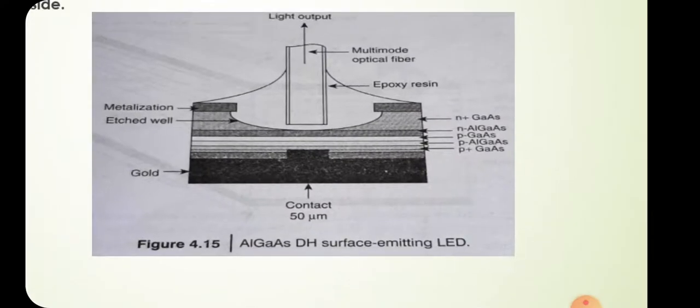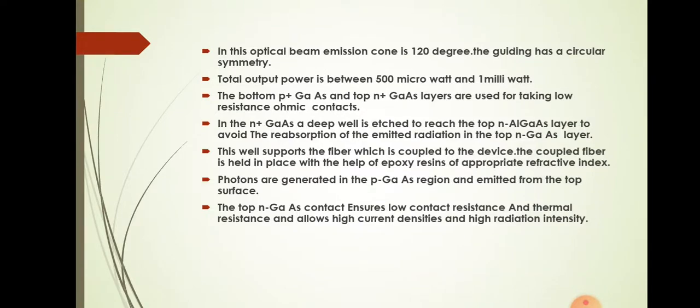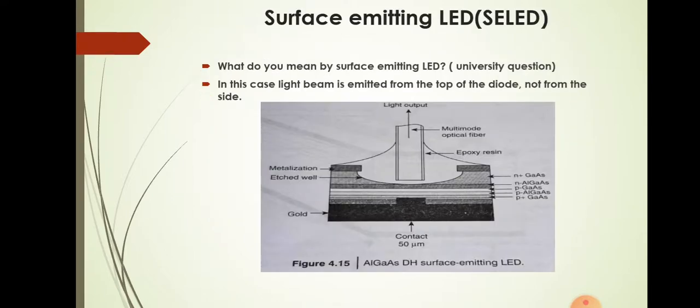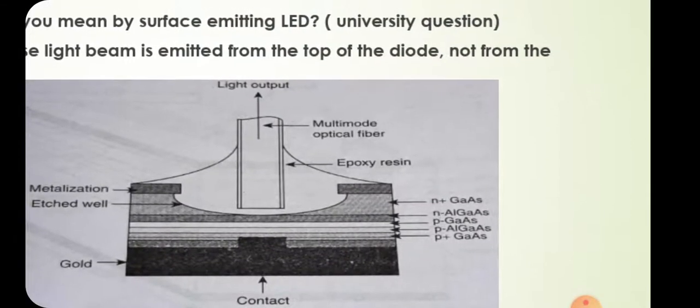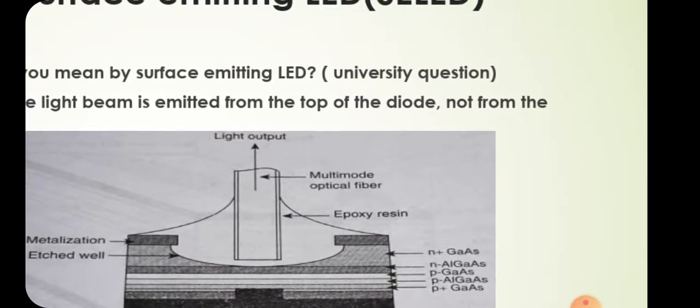In this case of optical beam emission, the cone is 120 degrees with circular symmetry guiding. The total output power is between 500 microwatts and 1 milliwatt. The bottom p-plus gallium arsenide and top n-plus gallium arsenide layers are used for taking low resistance contacts.